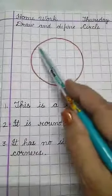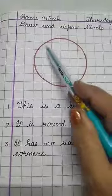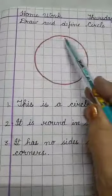See, this is a circle. You can see it is round in shape. Round all over.